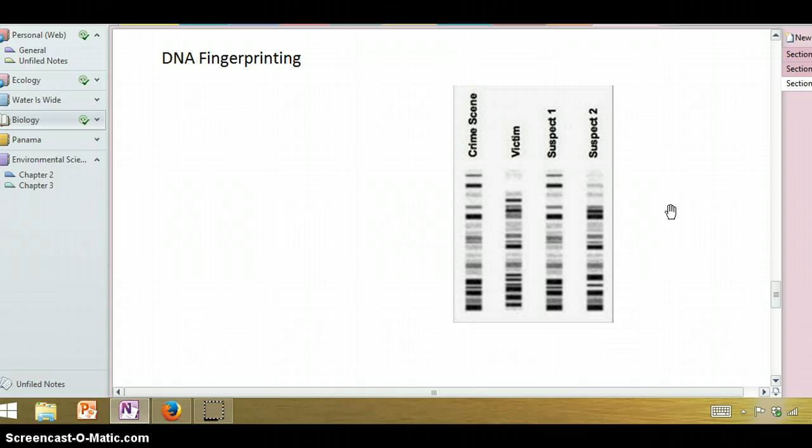Here we have some crime that's occurred. There's a victim, and there was DNA found at the scene, and that might come from blood or from a hair follicle.